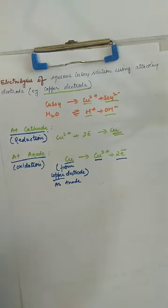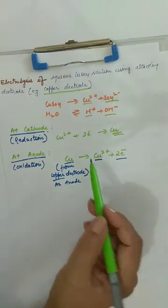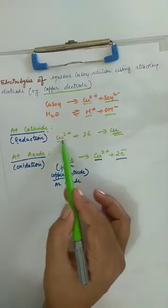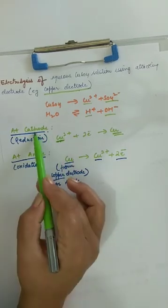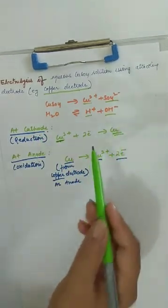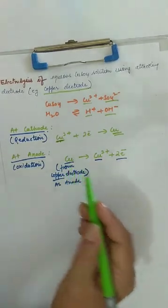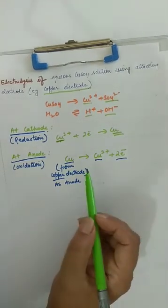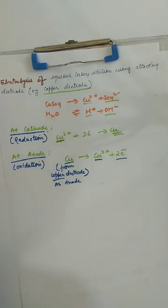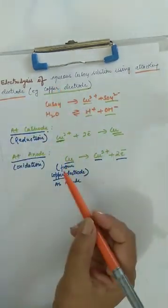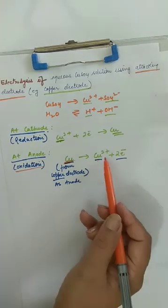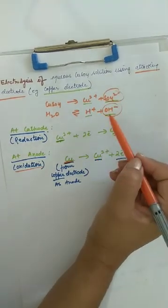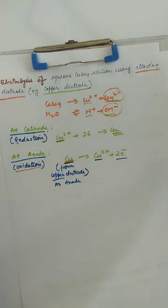So the net result of electrolysis is that Cu2+ ions from the solution are deposited on cathode as copper, and an equivalent amount of copper from the anode goes into the solution. These are the different products formed whether we use an attacking electrode or inert electrode. With attacking electrode, the atom from the anode electrode loses electrons to form the ions, and the other ions do not take part in electrolysis.